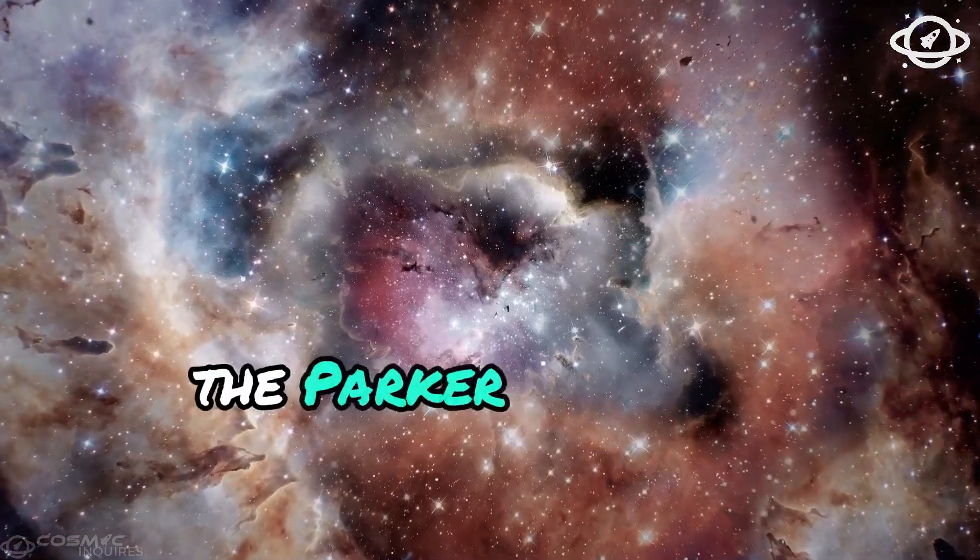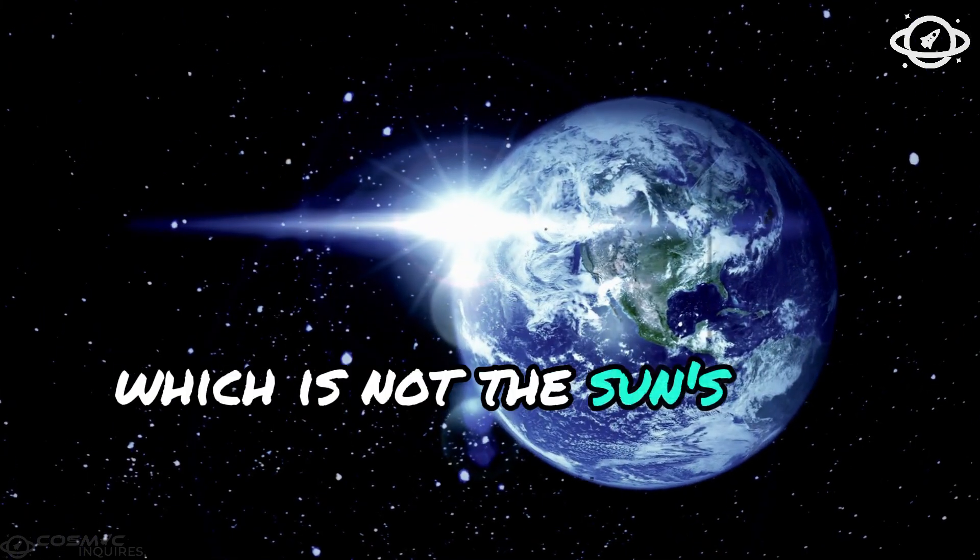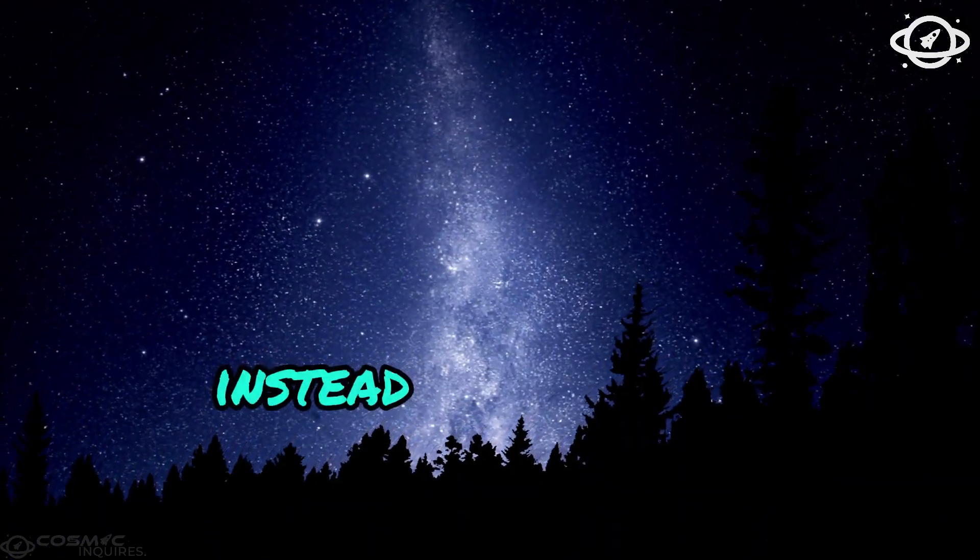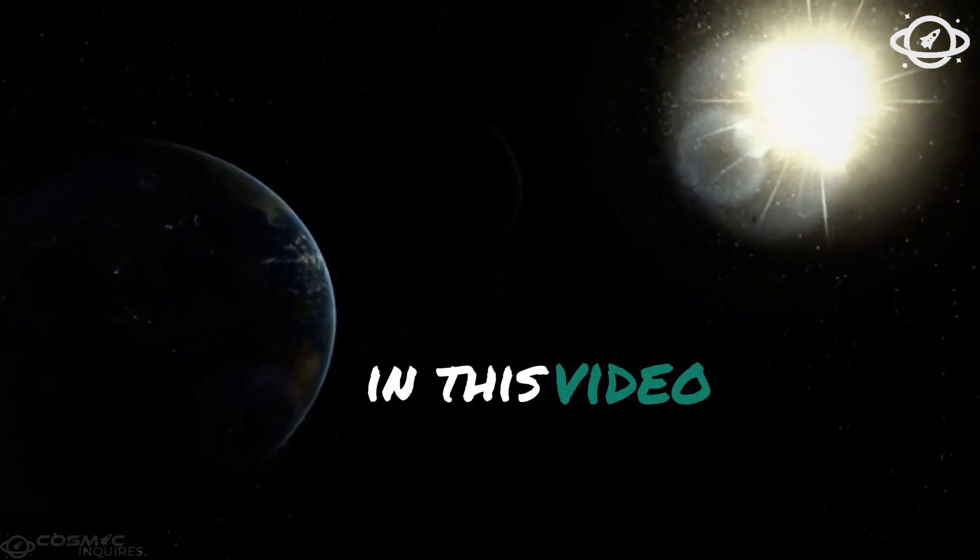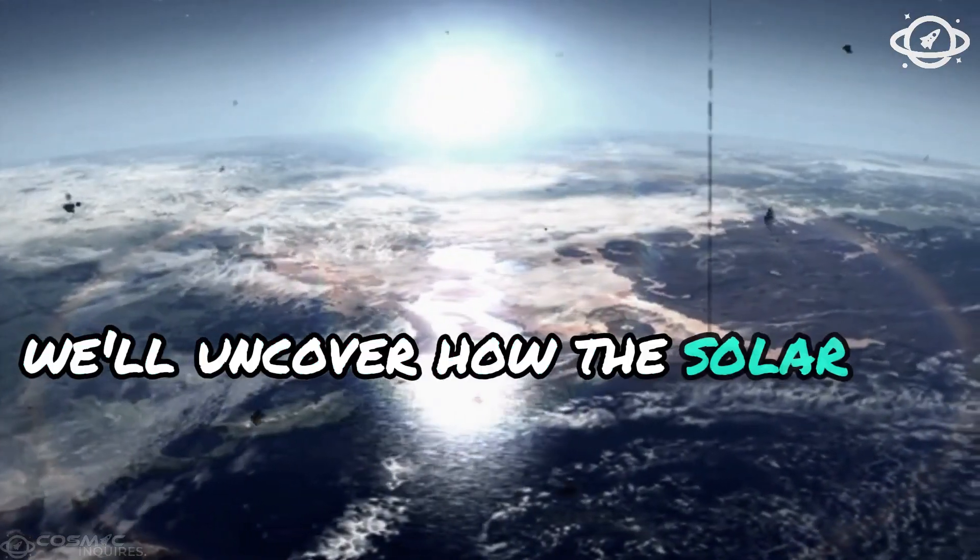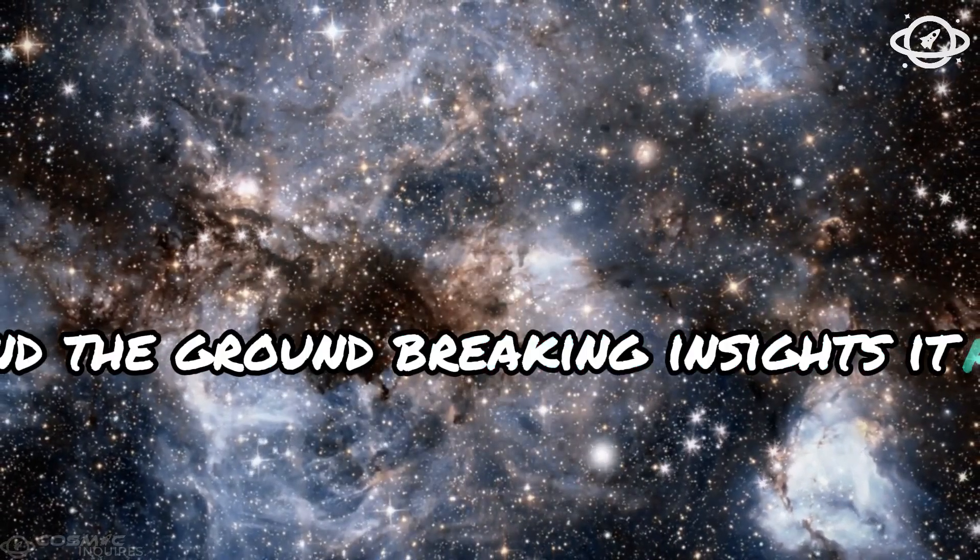The Parker Solar Probe periodically traverses the Sun's hottest layer, which is not the Sun's surface. Instead, it's the corona, the outermost part of the Sun's atmosphere. In this video, we'll uncover how the solar probe withstands extreme heat and the groundbreaking insights it aims to deliver.